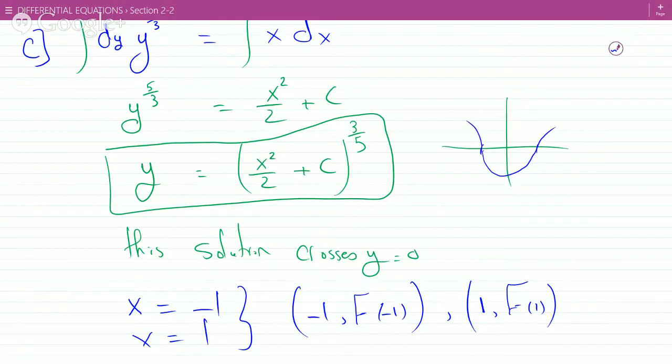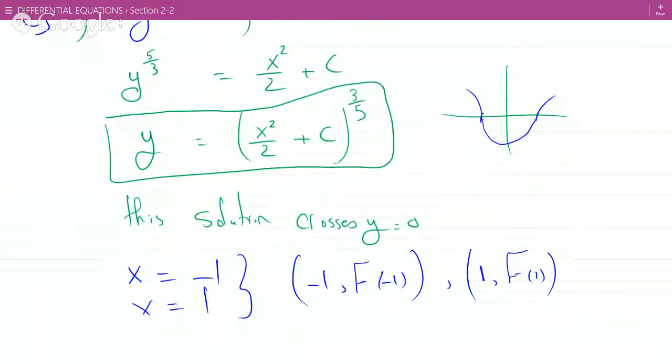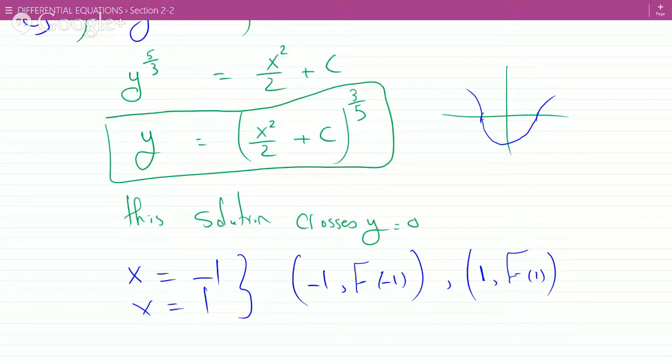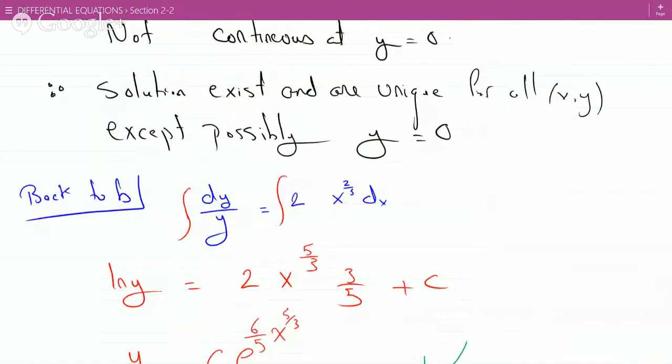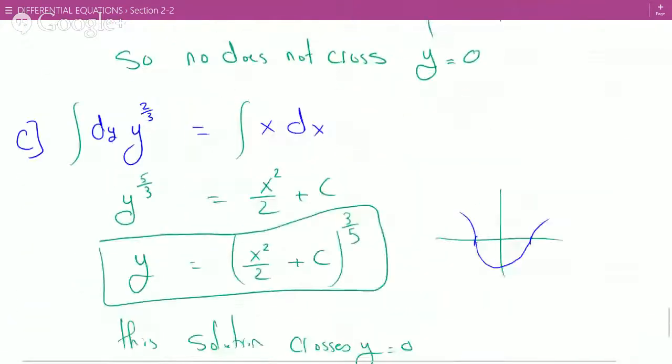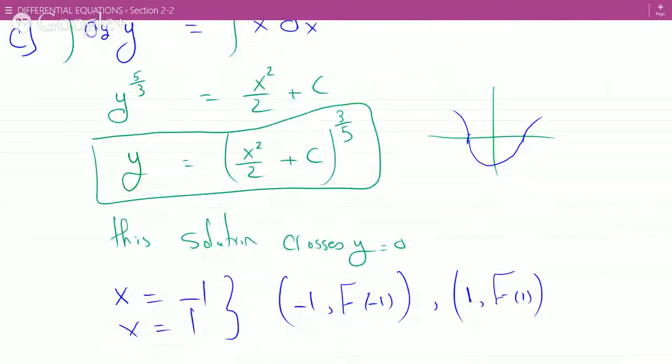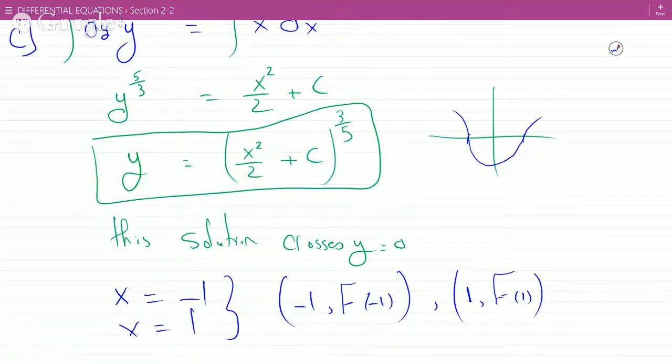So this graph might look something like this. Basically, you're shifted to whatever c value. You could shift it down. You could shift it up. If you shift it up, you don't cross y equals 0. If you shift it down, you do. But this is basically the idea. So here, at y equals 0, you can see that you get two different values for x. So it's not a unique solution as predicted by the theorem. It exists, but it's not unique.